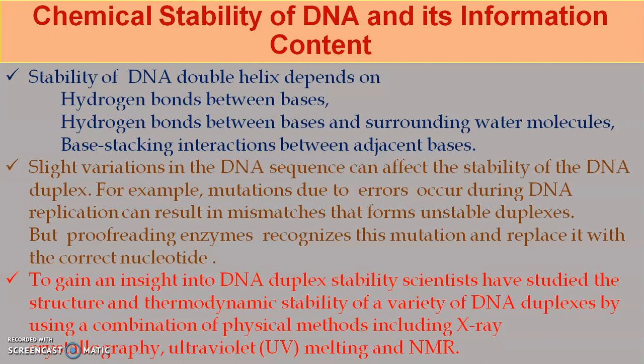For example, if mutations take place — mutations being changes in the sequence of DNA molecules — these can result from errors during DNA replication and cause mismatches, forming an unstable DNA double helix. However, proofreading enzymes can recognize these mutations and replace the mismatched nucleotides with the correct ones. This is the DNA repair mechanism.